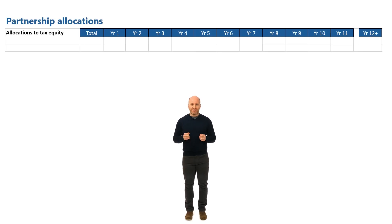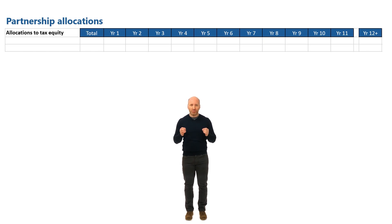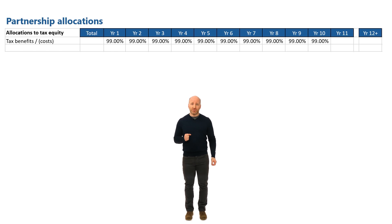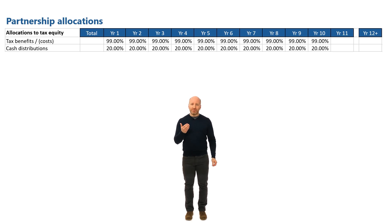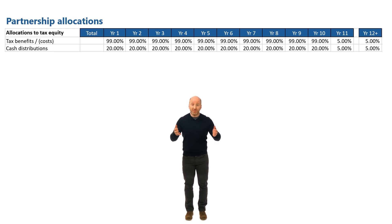We'll use our sample project to demonstrate 704B tax capital accounts with disproportionate allocations of tax attributes and cash distributions. The tax and cash allocations for our WIN project are just like we mentioned earlier. The tax equity partner will receive 99% of the tax attributes and 20% of the cash distributions for the first 10 years, and after that 10 years, the allocations will flip and the tax equity partner will receive 5% of both the tax attributes and the cash distributions. The sponsor partner is just going to receive the inverse of those benefits.